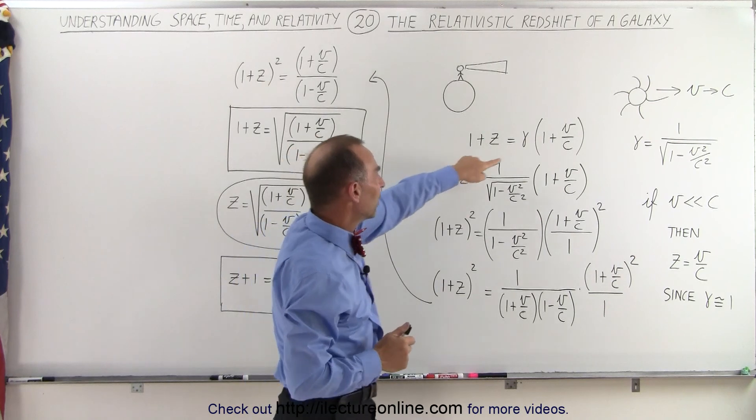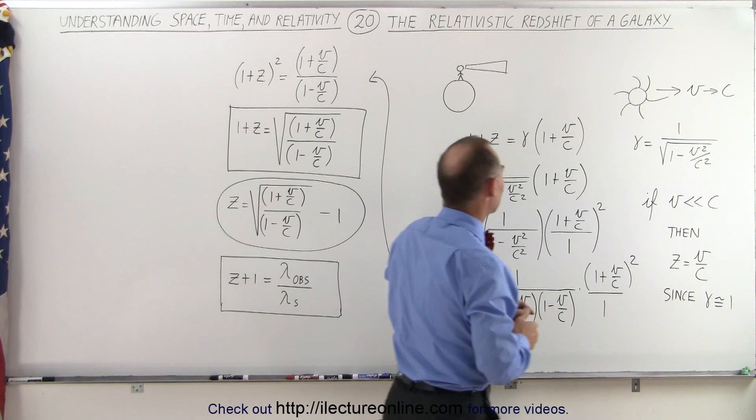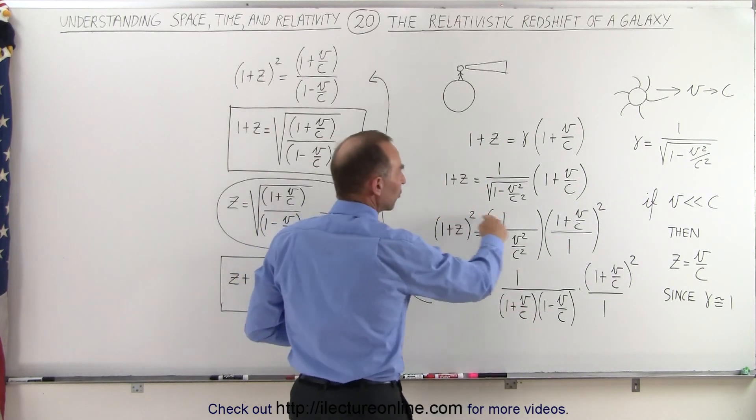If we replace gamma—because gamma equals 1 over the square root of (1 - v²/c²)—the equation turns into this.